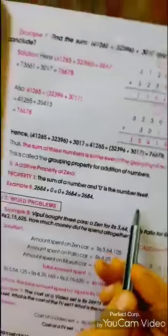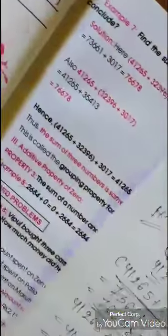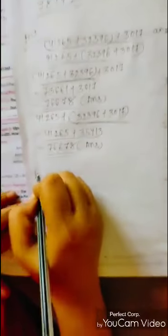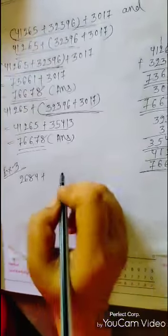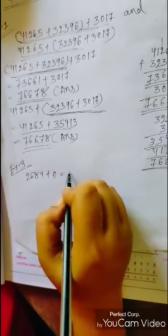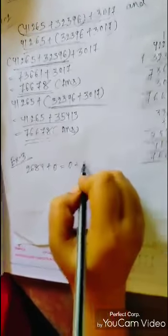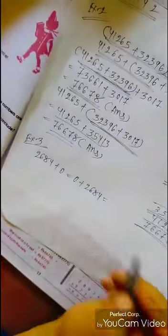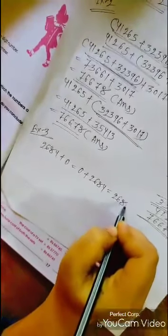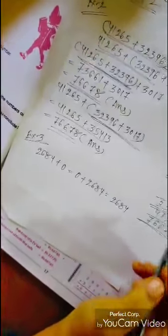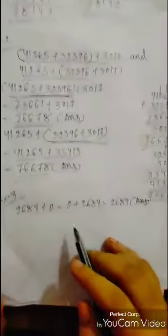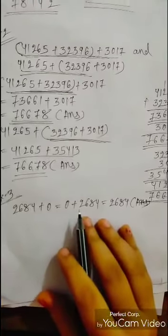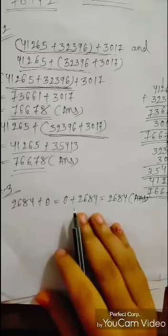Property 3 — the sum of a number and 0 is the number itself. For example: 2684 plus 0. We can also alternate this — 0 plus 2684. What will be the answer? The answer will be the number itself. If we add any number to 0, the answer will be the number itself.